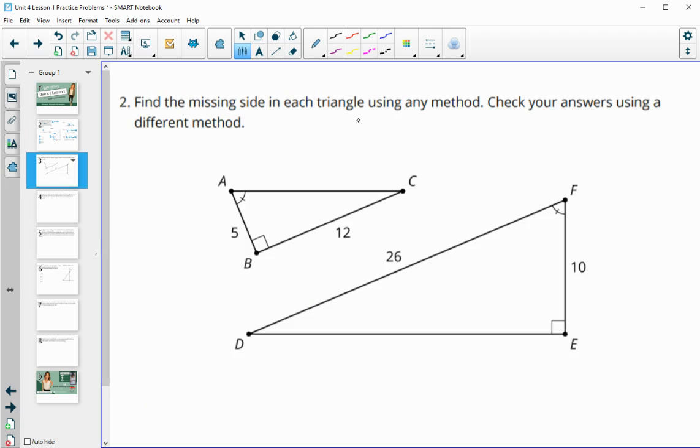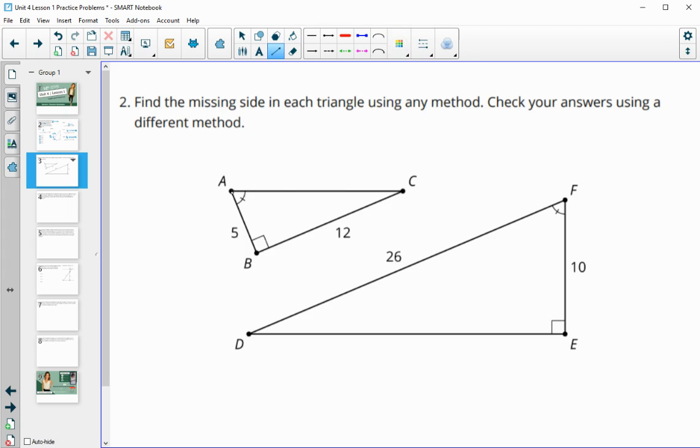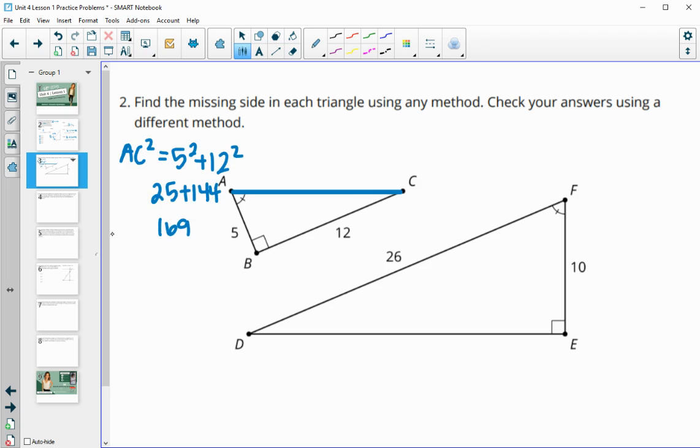Number 2 says find the missing side lengths in each triangle using any method and then check your answers using a different method. So these are both right triangles that have two side lengths. So we could find the missing side length by doing Pythagorean theorem. So in this case, I've got the hypotenuse missing. So we would say AC squared is equal to 5 squared plus 12 squared and solve that way. So we've got 25 plus 144, which is 169. So that's AC squared. And then we could square root that and we would get that AC equals 13. So that's one way to do it.